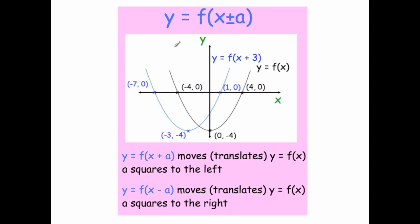Finally, there's y equals f of x plus a or f of x minus a, which translates horizontally — but in the opposite direction to what you'd expect. For y equals f of x plus 3, you'd think it moves right, but it moves 3 squares to the left. So (4, 0) moves to (1, 0), (-4, 0) moves to (-7, 0), and (0, -4) moves to (-3, -4). Adding inside the bracket moves it left; subtracting moves it right.